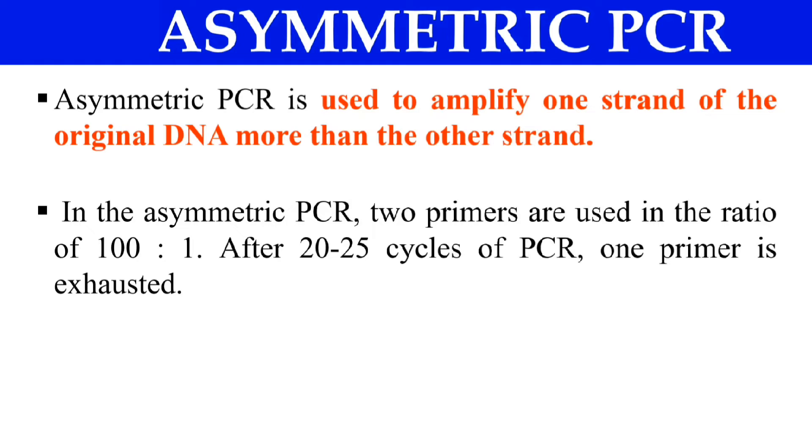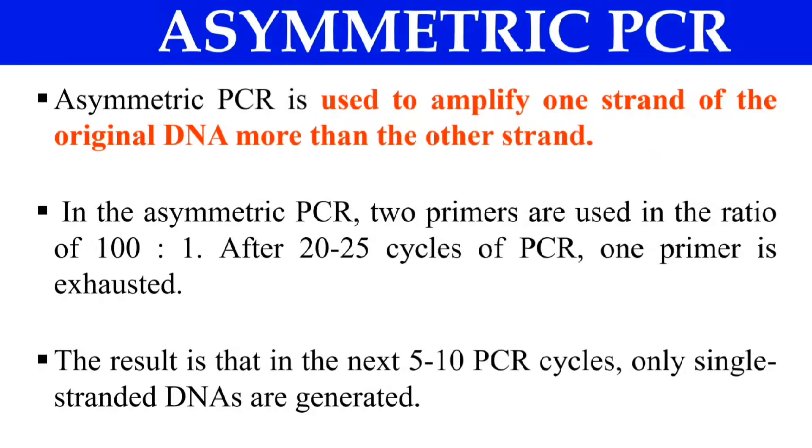So ultimately, what will we get? We will get only one strand amplified by the primers that remain. The result is that with the next 5 to 10 PCR cycles, we have only single strands generated.